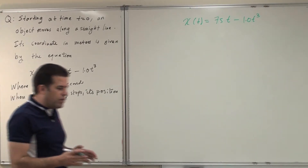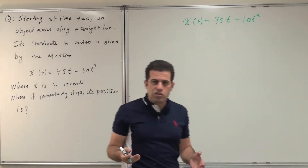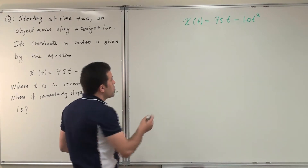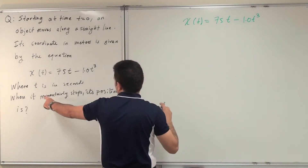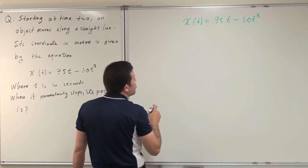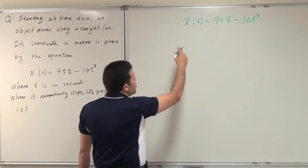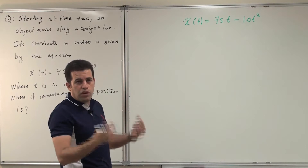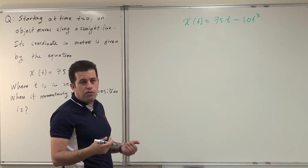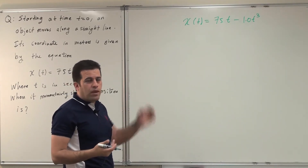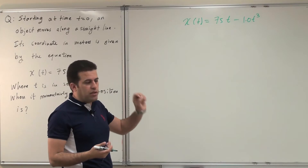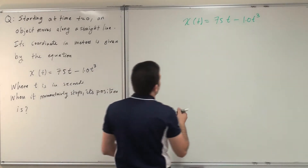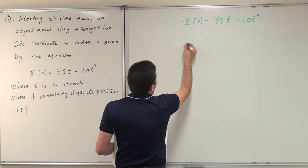I need to find the answer in meters, in distance or in position. The condition given is that when it stops. So I need first to derive my equation to get velocity or speed, then equate it to zero, get the time when it stops, and then substitute it in the position or coordinate equation.